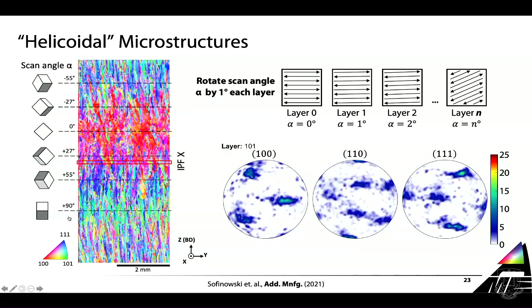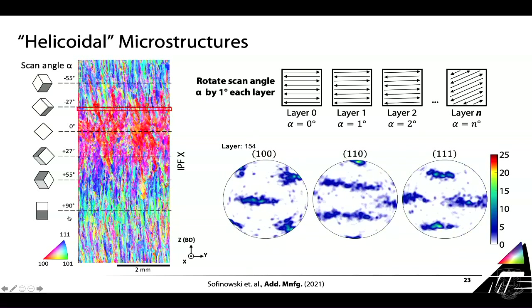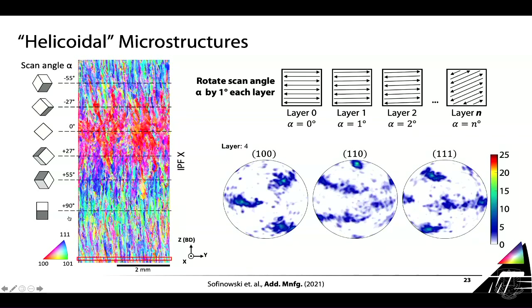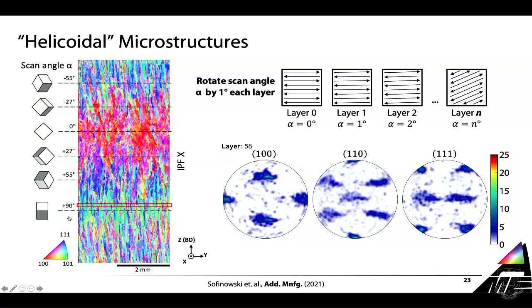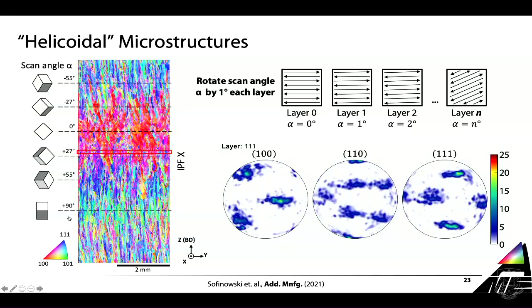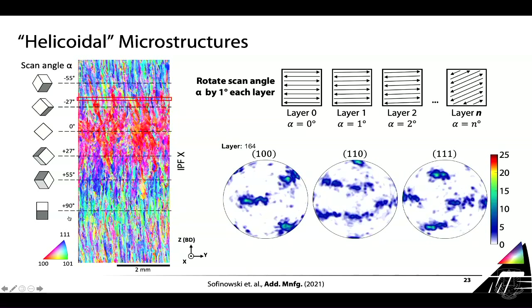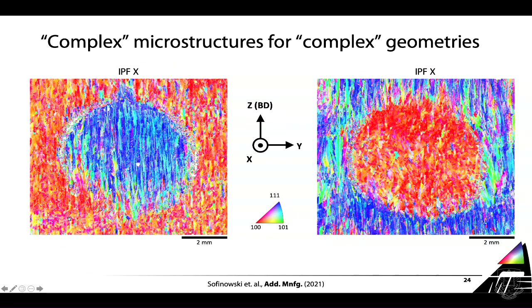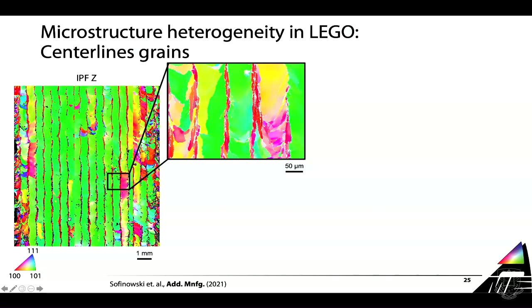This is something you cannot possibly find in nature - it can only be done by additive manufacturing with this kind of level of microstructure control. This is the actual measurement: an animated GIF of all the pole figures acquired layer after layer by my postdoc. It shows a fixed 1-1-0 axis parallel to the build direction, and then all the other poles rotate about that axis. There is also no reason why we should only change the laser scan direction from one layer to the next - we can change it within the layer and create microstructures with more complex shapes. Note: these are not parts with complex shapes - these are microstructures with complex shapes.